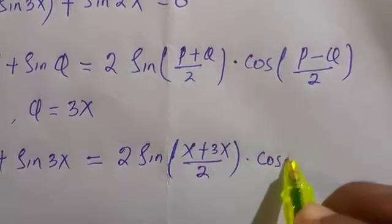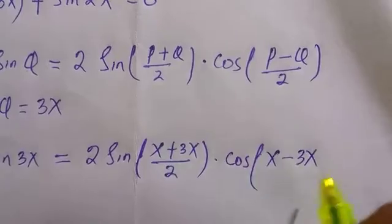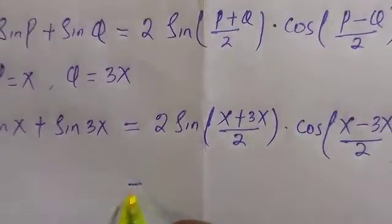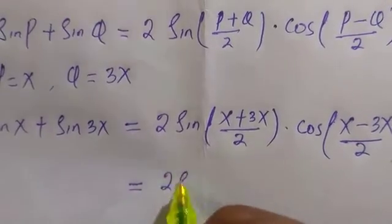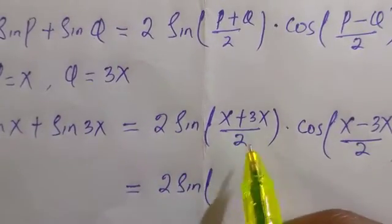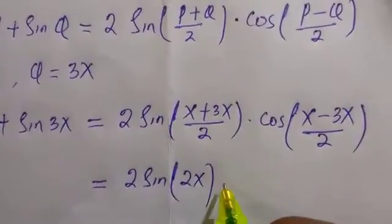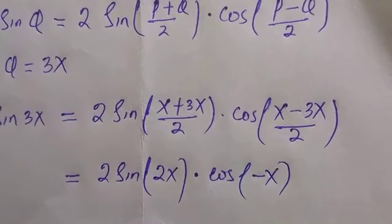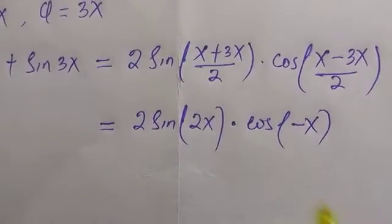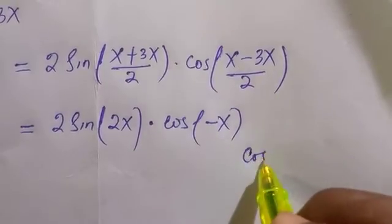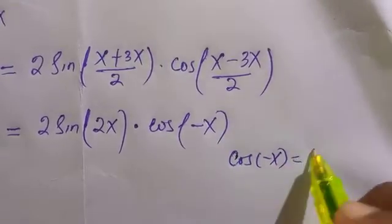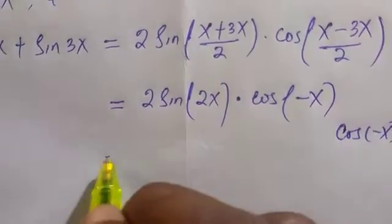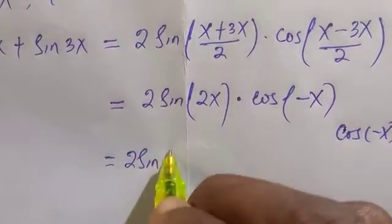Let's simplify further. We have 2sin(4x/2) × cos(-2x/2), which equals 2sin(2x) × cos(-x). We should know that cos(-x) is positive because cos is an even function, therefore we write this as 2sin(2x)cos(x).